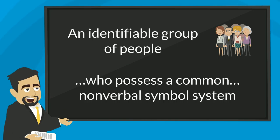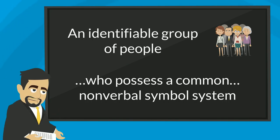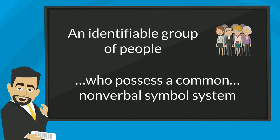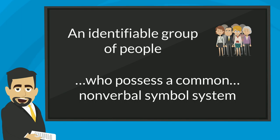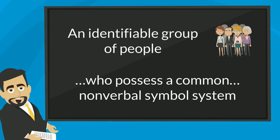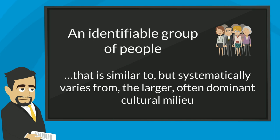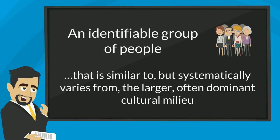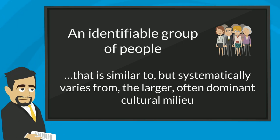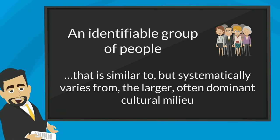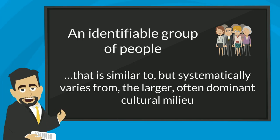Who possess a common non-verbal symbol system. The members of the microculture may use different clothing that helps to identify them. They may have in common a special type of art or music, or use different gestures when they are together. That is similar to, but systematically varies from, the larger, often dominant cultural milieu — meaning the microculture has a lot in common with the larger culture, but they also have certain key differences.